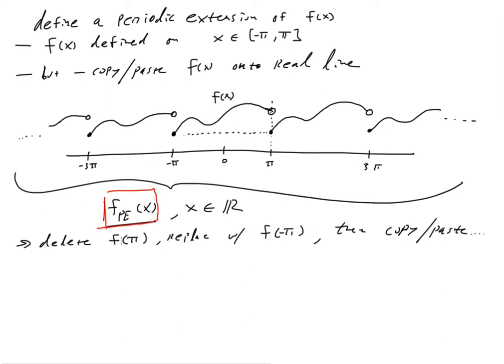And what we do, of course, is delete f at π, replace with f at negative π, and then copy and then paste. So that's what we're going to call f_PE, or the periodic extension. So now we have that defined. And again, the utility of this periodic extension, we're going to find out in a subsequent video. This is very much a utility video that just details a few pieces in order to get an understanding. We just need these definitions laid down before we can do anything else.